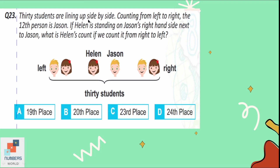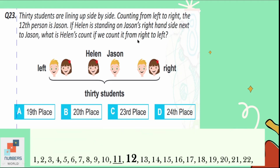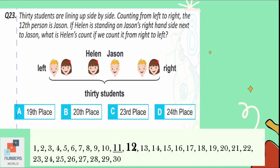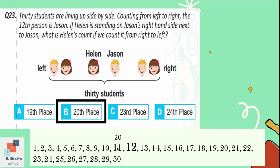Question number 23: 30 students are lined up side by side. Counting from left to right, the 12th person is Jason. Helen is standing on Jason's right-hand side next to him. What is Helen's count from right to left? Jason is at position 12 from left to right, so Helen is at position 11 from left to right. Counting from right to left, Helen is at the 20th position. Option B is correct.